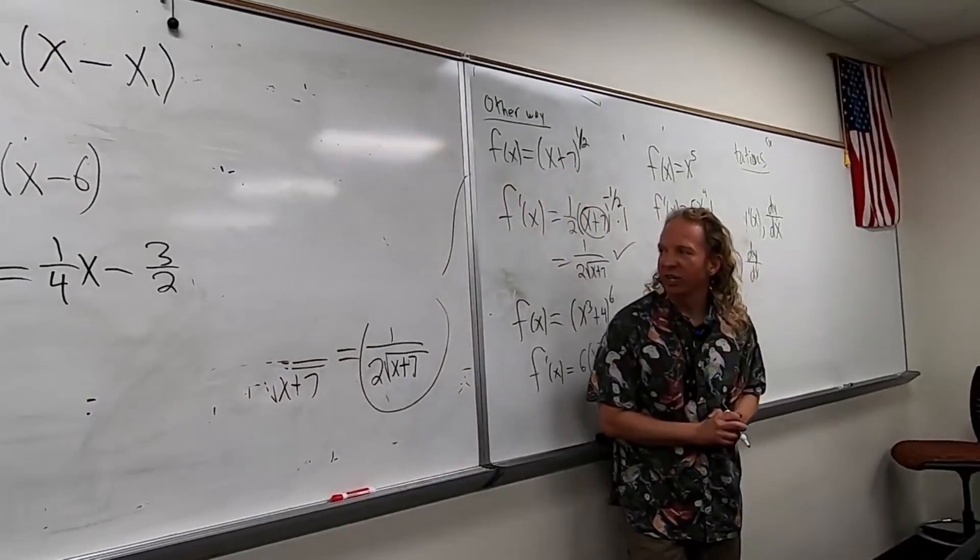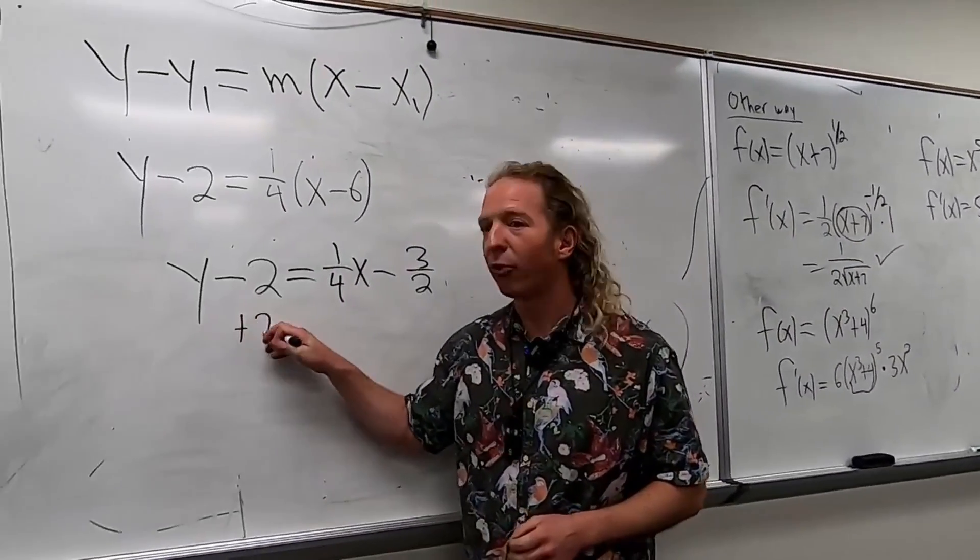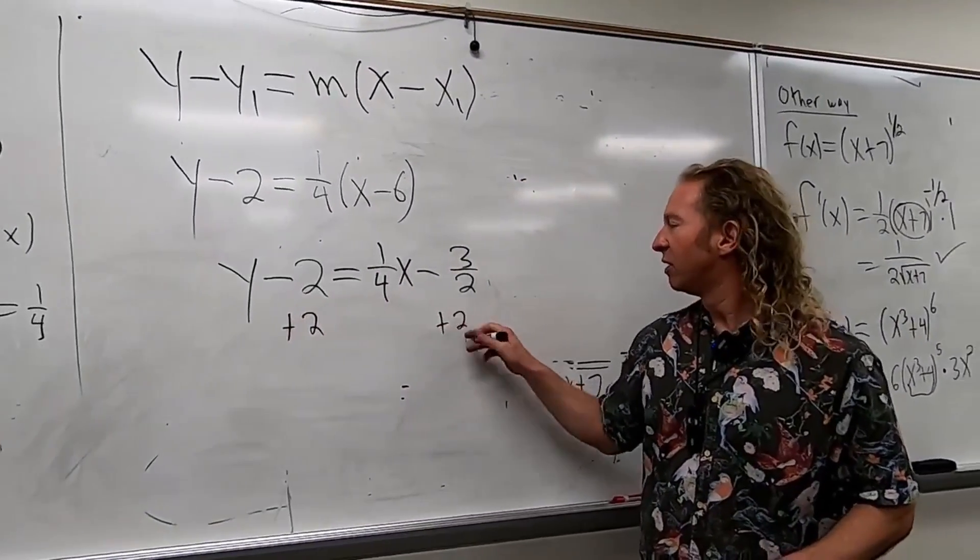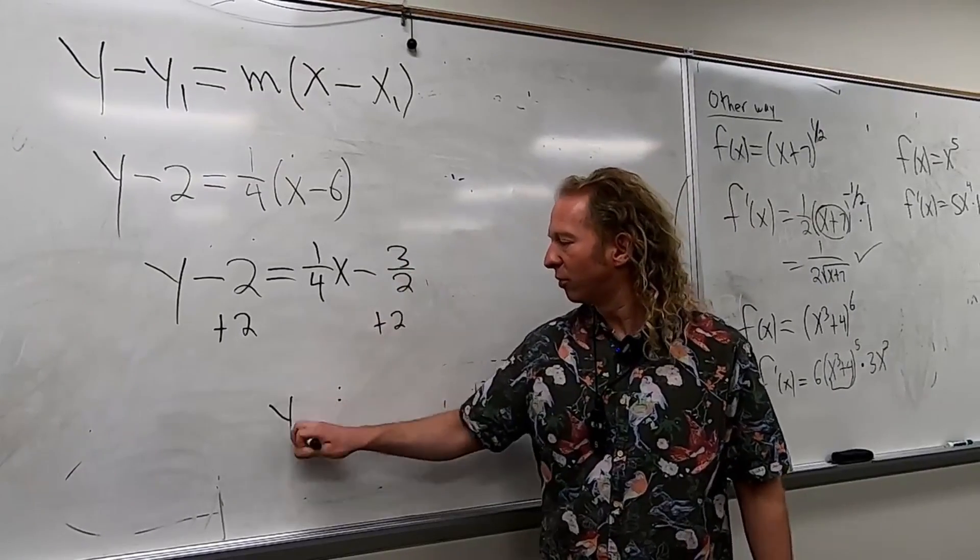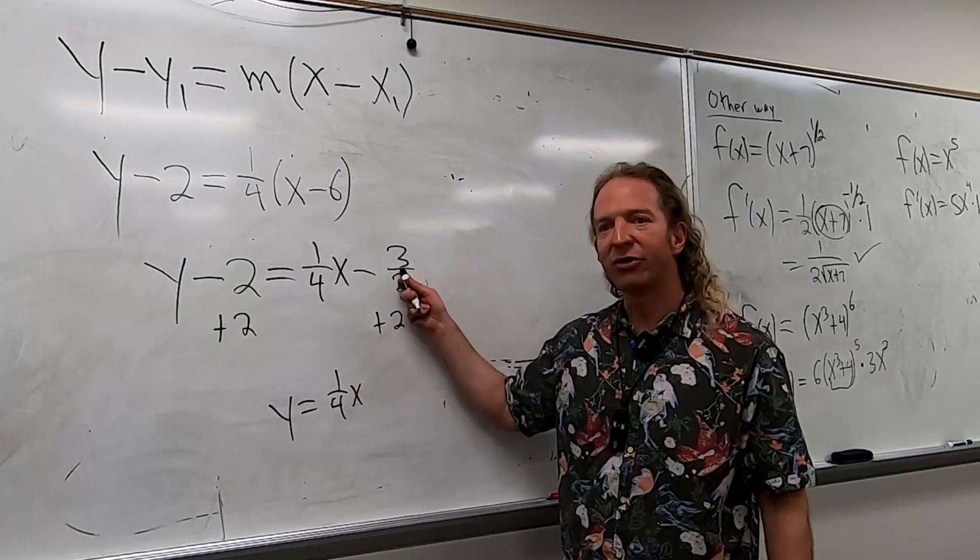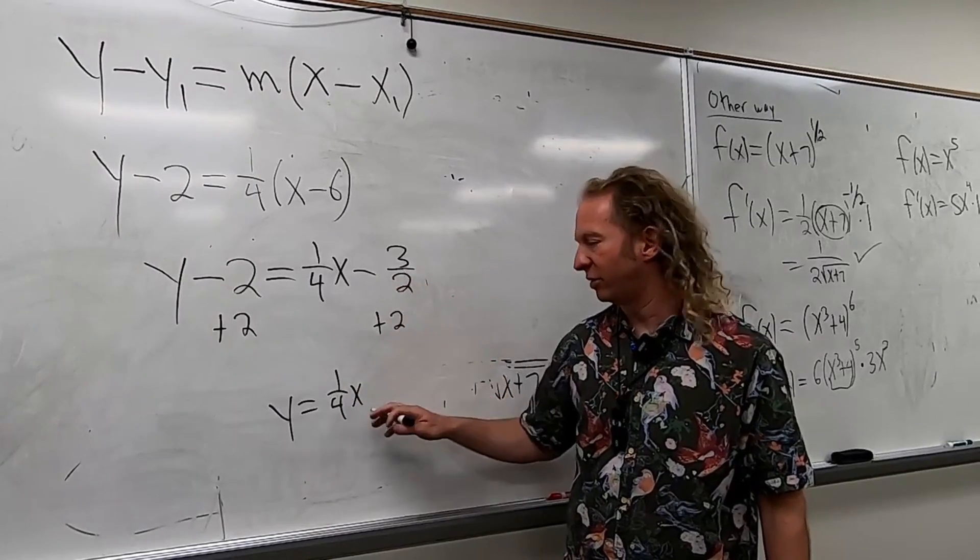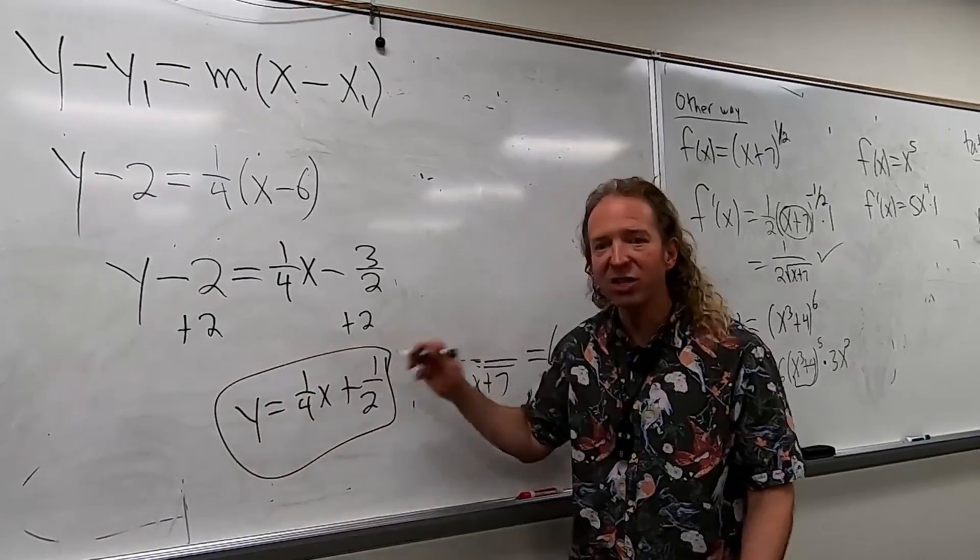And then you just have to add 2 to both sides, right? So when you're adding 2, you can think of it as 4 over 2, right? So that you can add these. So 4 over 2, so we'll have 4 over 2 minus 3 over 2 is just 1 over 2. Did I do that right? Yeah. 1 over 2, and that's it. That's the equation of the tangent line.